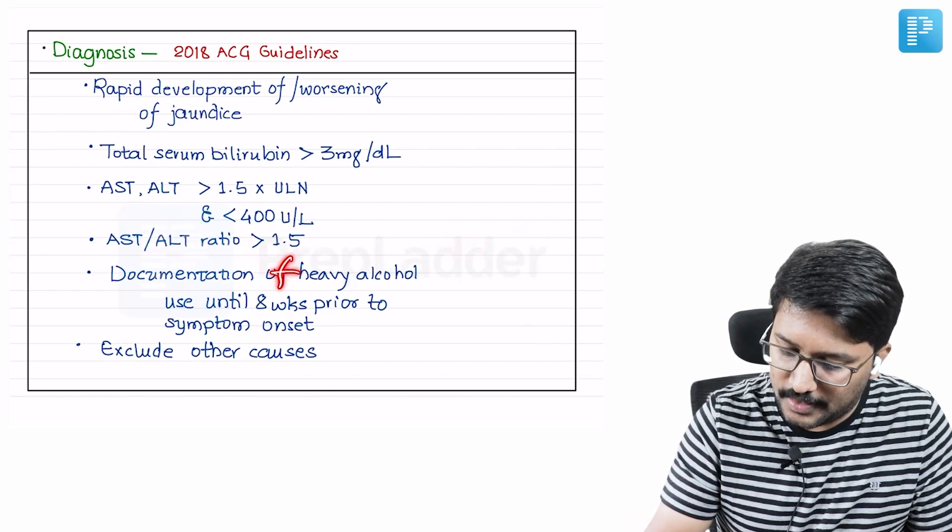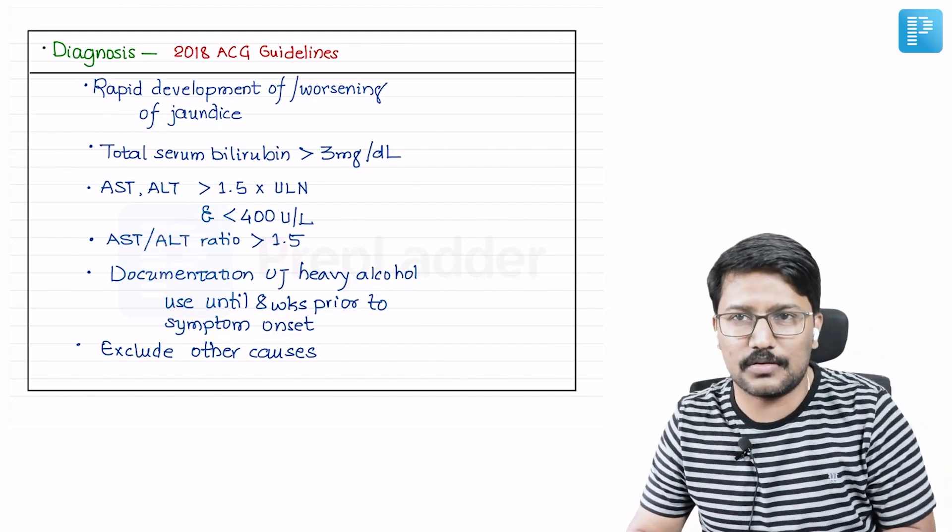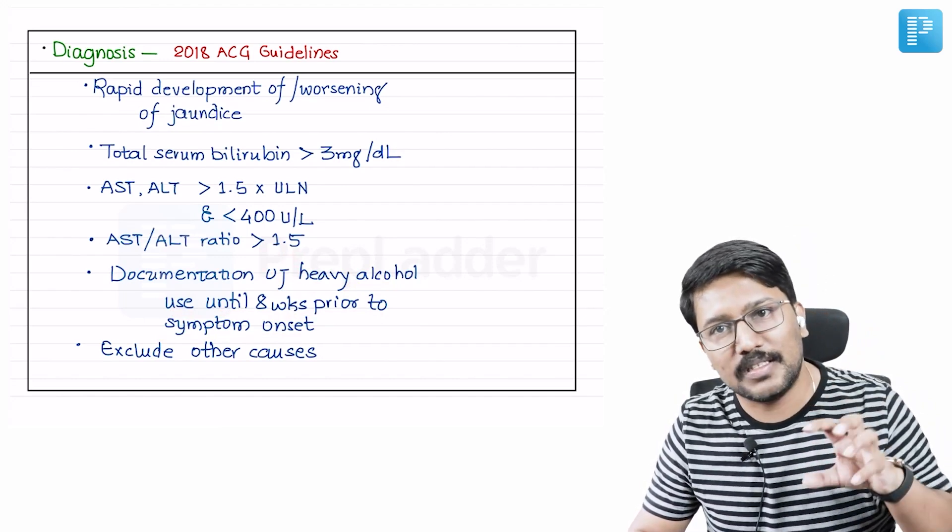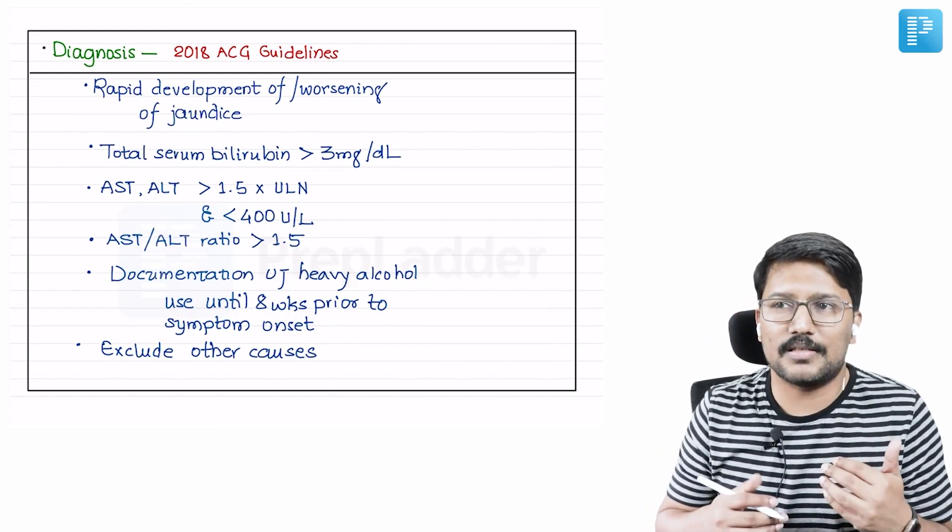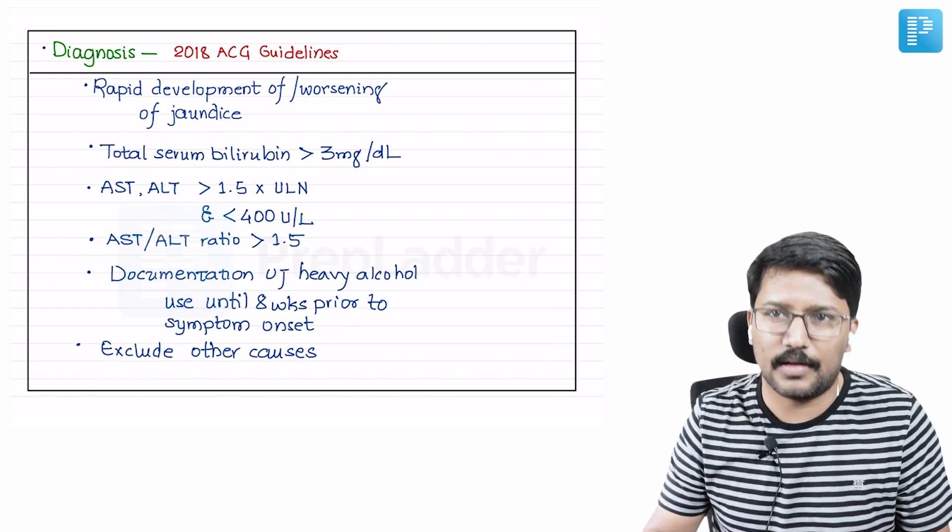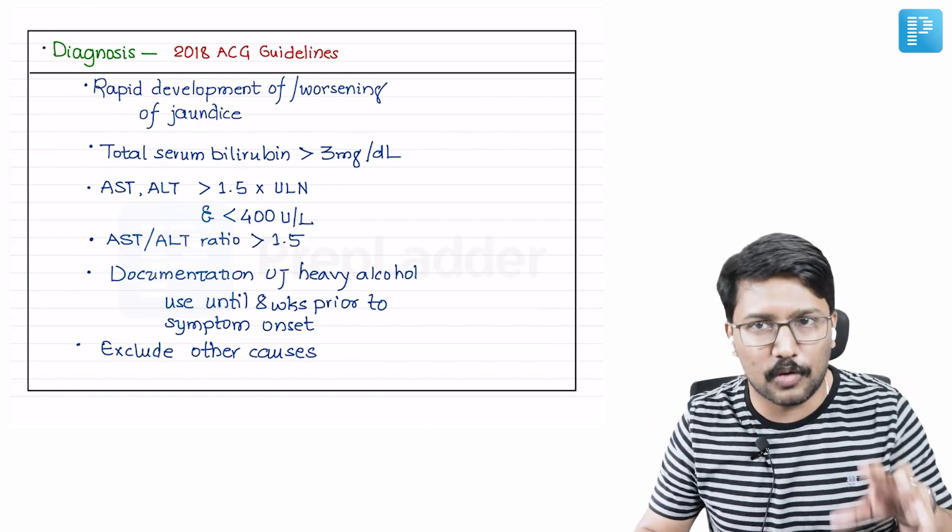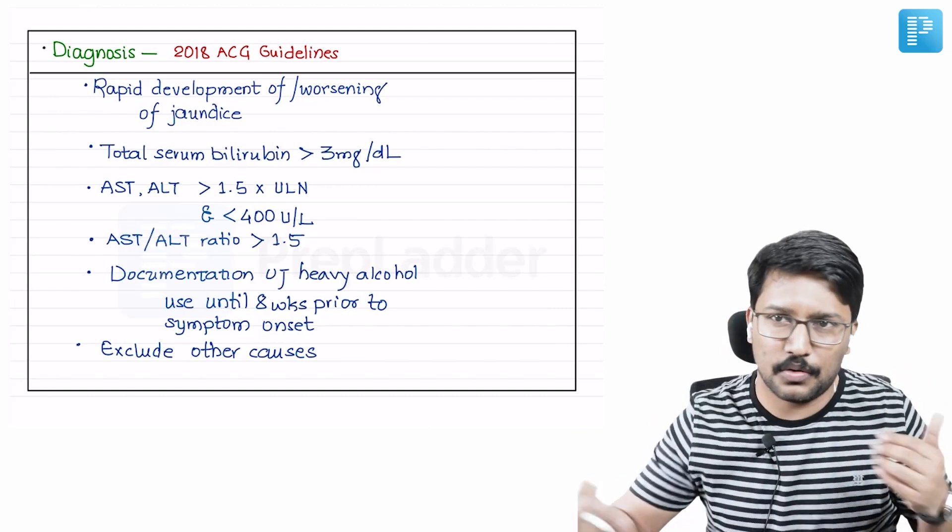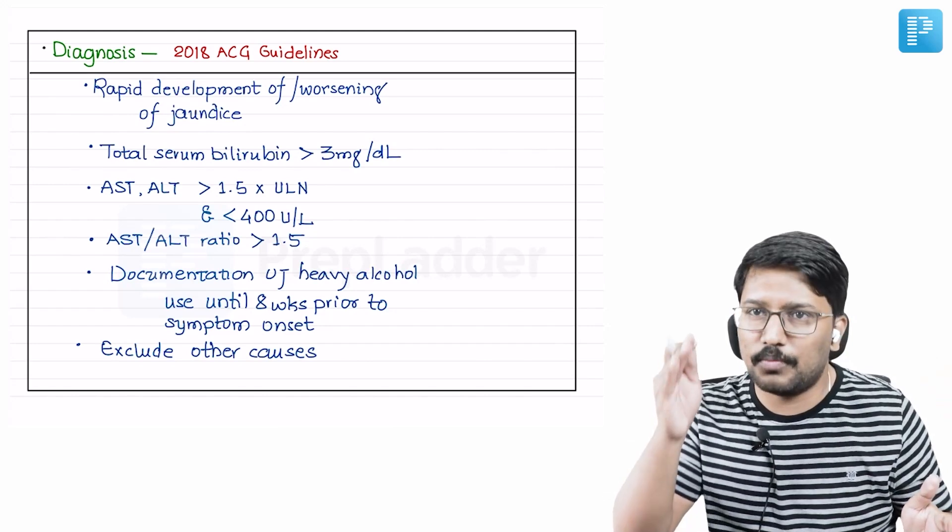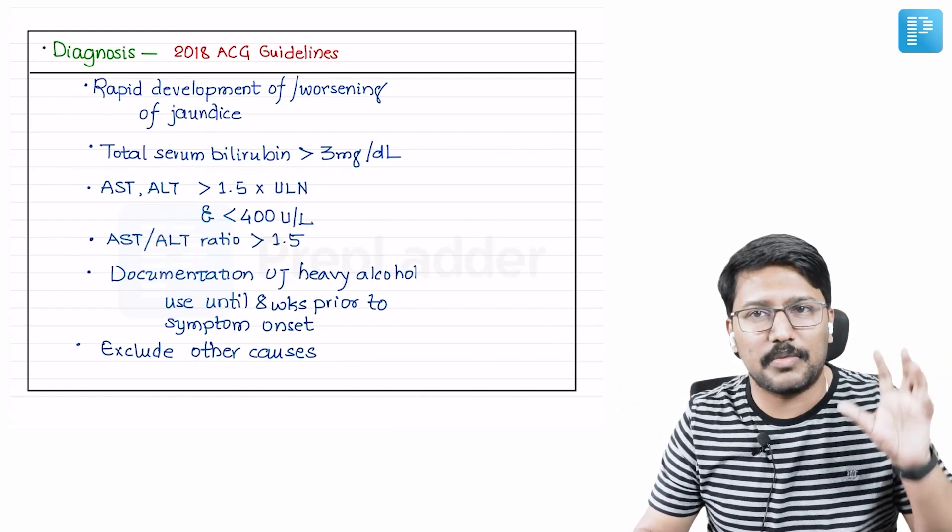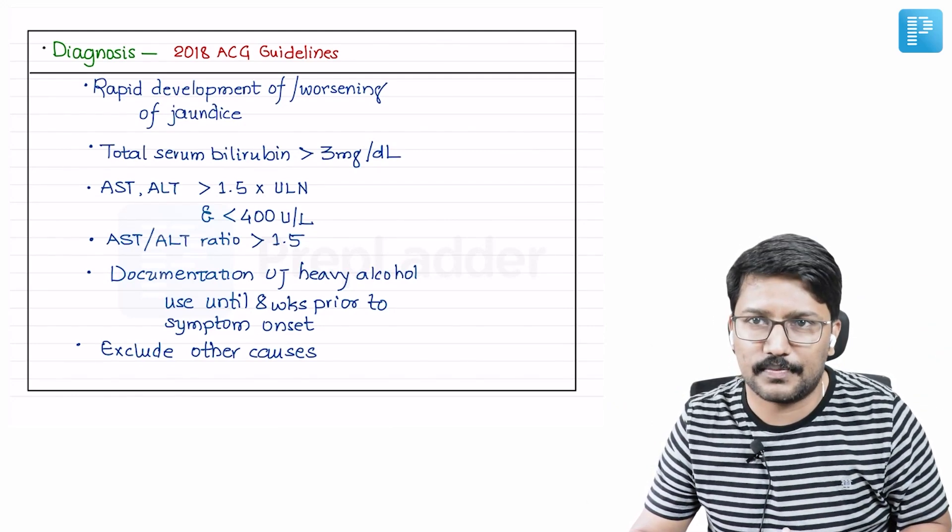Then comes the next criteria: documentation of heavy alcohol consumption until 8 weeks prior to symptom onset. That doesn't mean like a patient has continued consumption as of now, you don't diagnose it as alcoholic hepatitis. But if at all, patient is in abstinence, which is a very common story. The common story because once they develop alcoholic hepatitis, this is an illness which often makes them quite feel sick, and the illness might restrict them from drinking. Not that they are motivated to stop drinking, but illness itself may stop them from drinking. They may become confined to bed, and access to alcohol may not be readily available.